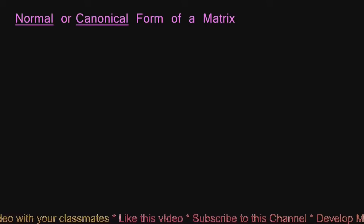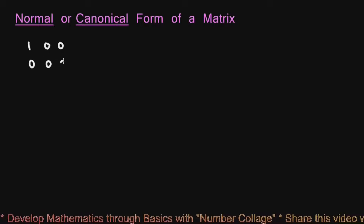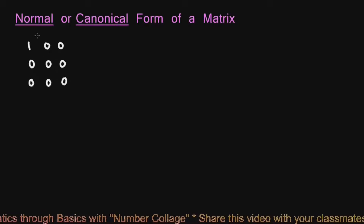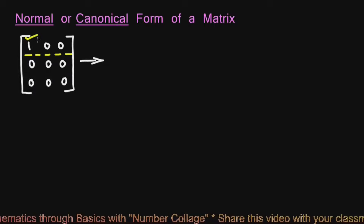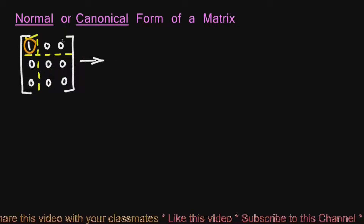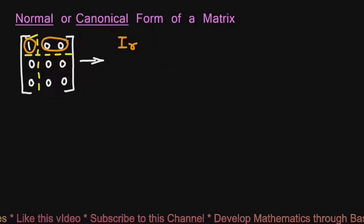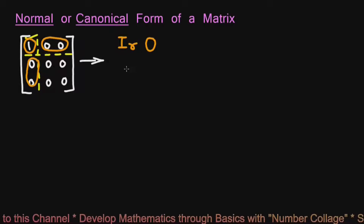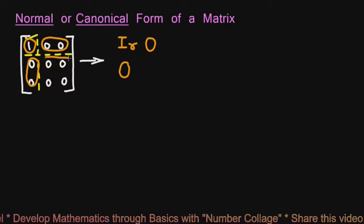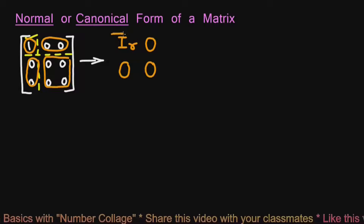The normal or canonical form of a matrix may look like a matrix [1,0,0; 0,0,0; 0,0,0], where we can separate this using demarcation lines. Here, the 1 represents a unit matrix of rank 1, I1. The row of zeros represents O, the column of zeros represents another O, and the square submatrix of zeros represents another O.